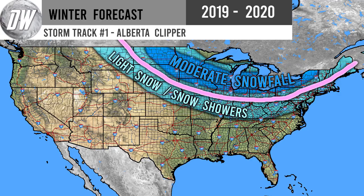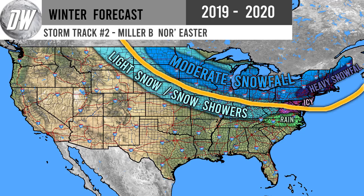Here are two storm tracks I highlighted in a winter forecast a few months ago that I expect to be very common in November. First is the Alberta Clipper — we'll probably see a few of these. Keep in mind this map was made for winter, so southern areas like Kentucky, Tennessee, Virginia, and Missouri won't have quite as good a chance at snowfall as they would in January. The second storm track is the Miller B Nor'easter, which often pairs with the Alberta Clipper — starting as a clipper then becoming coastal. This would bring heavier snow to coastal regions like New York City and Boston, though a 12-inch-plus event seems unlikely this early in November.